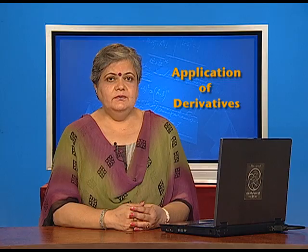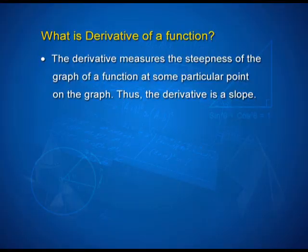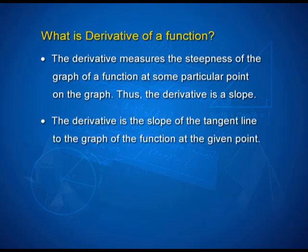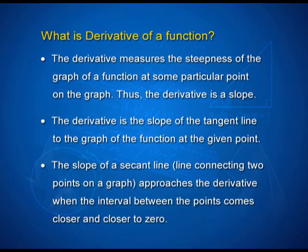What is the derivative of a function? It measures the steepness of the graph, so it is a slope. It is the slope of the tangent line to the graph of the function at the given point, and it is the slope of a secant line — the line connecting two points on a graph — in its limiting position when it becomes the tangent. So in the limiting position, when the two points come closer to each other, we get the slope of the tangent, which is also what we understand as the derivative.